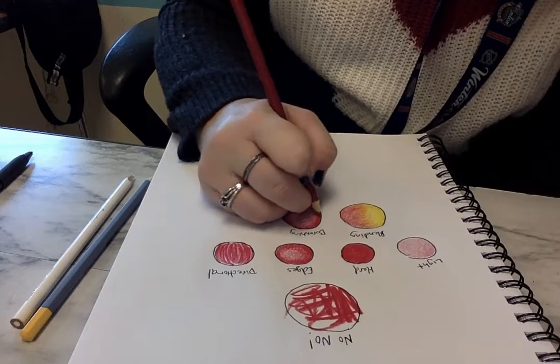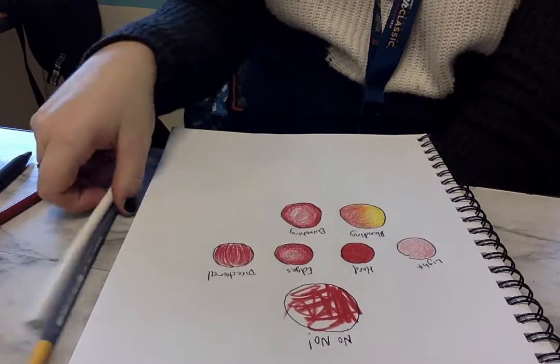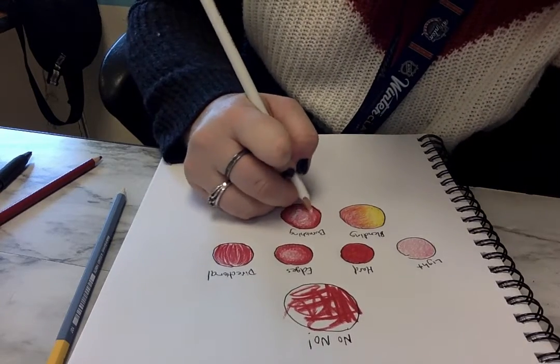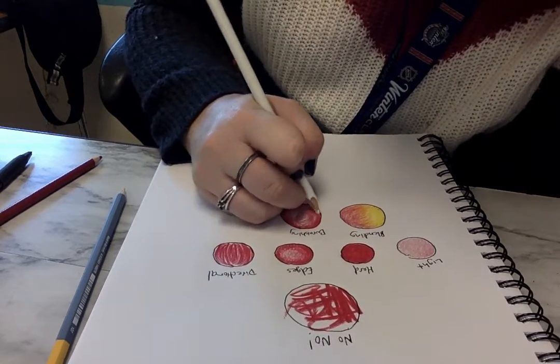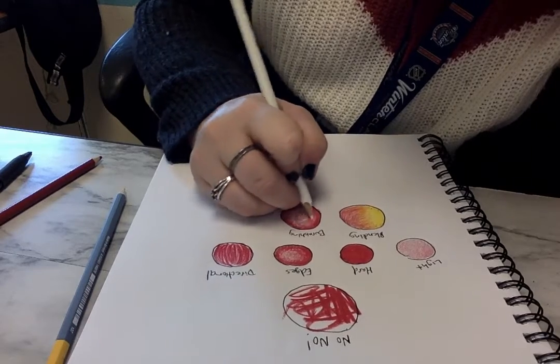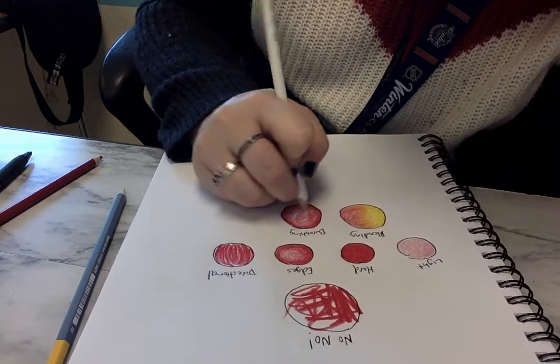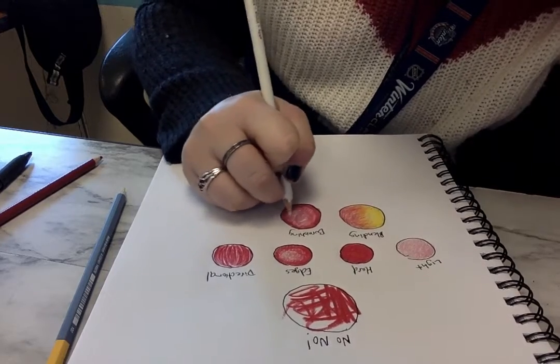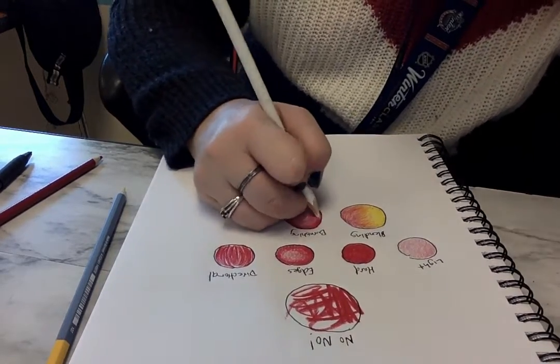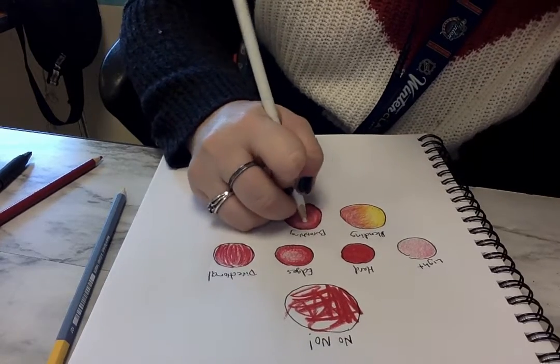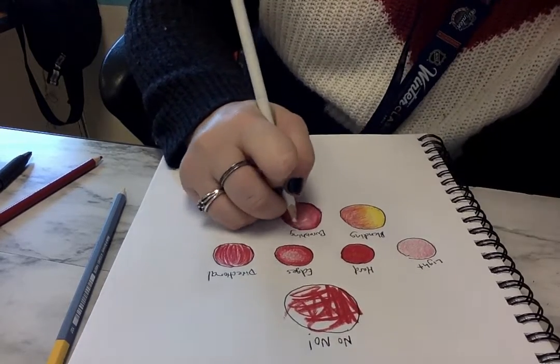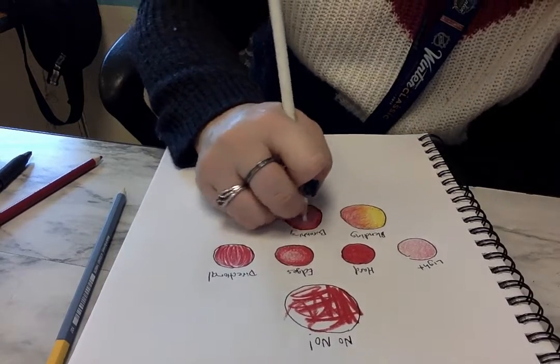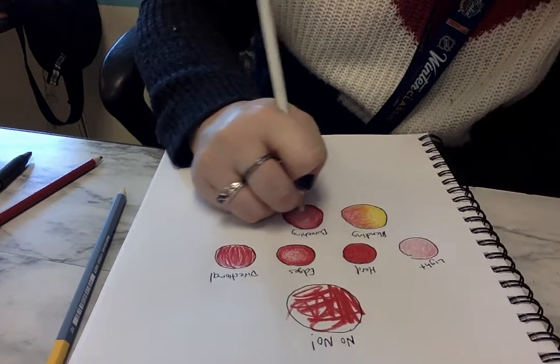Now for burnishing, the way you burnish is kind of like blending them all together. This is where our handy-dandy white colored pencil comes in. You can go over top and the white pencil blends your colors for you. It kind of gets rid of the white space and it pulls the red into your shape and makes everything a little bit softer. You kind of have to press really hard when you're going in with the white, but it makes it a little bit softer.